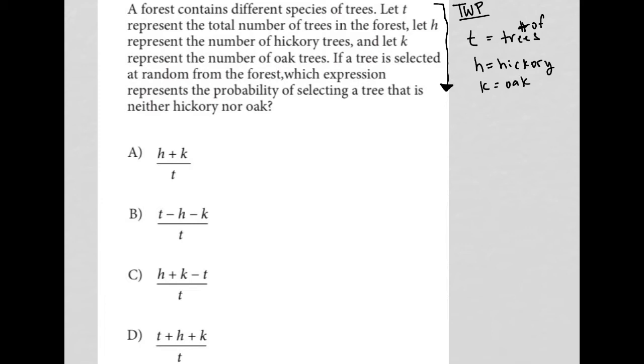If a tree is selected at random, right? So we have T trees that we're choosing from. And if a tree is selected at random from the forest, which expression represents the probability? Okay. Probability.